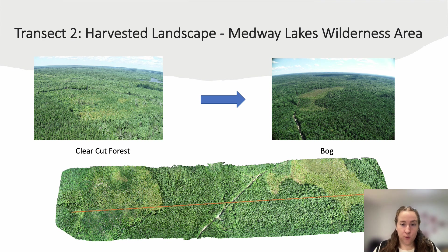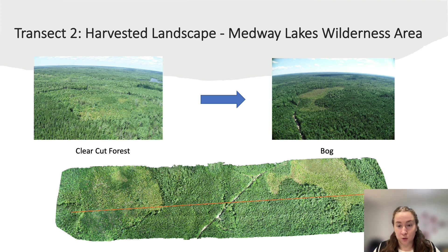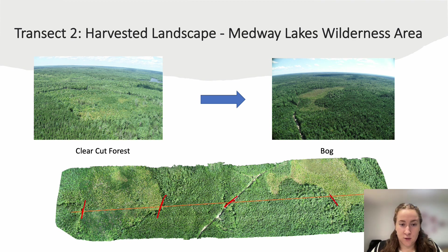Transect two looks at the harvested landscape and is located in the Medway Lakes Wilderness Area. It runs from the mature forest into the clear cut, then through a young spruce-dominated forest, across the road, into another young forest which transitions into a more mature forest as you get closer to the bog, and then the transect concludes within the bog. Visually we see edges on either side of the clear cut, again on the road, and then again as we enter the bog.